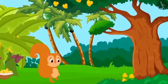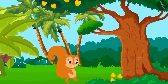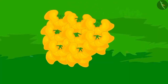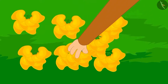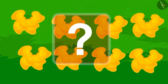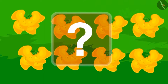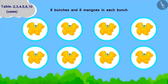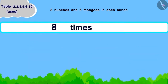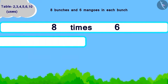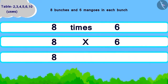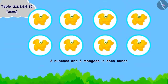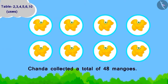Chanda collected a lot of mangoes and tied them in bunches of six mangoes each. Chanda now has eight such bunches. Can you tell how many mangoes she collected in total? Eight bunches, six mangoes each: eight times six, or eight multiplied by six. Using the table of six, the answer is forty-eight. Chanda collected a total of forty-eight mangoes.